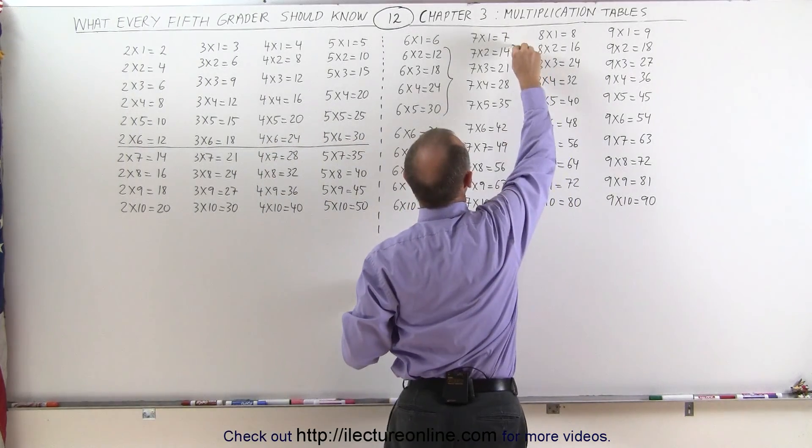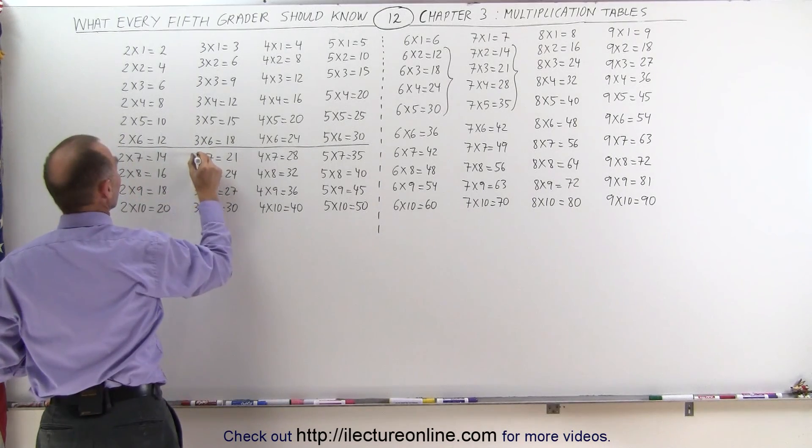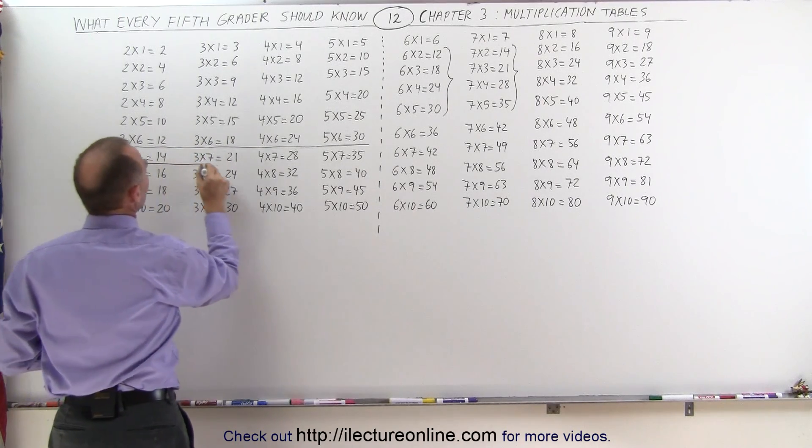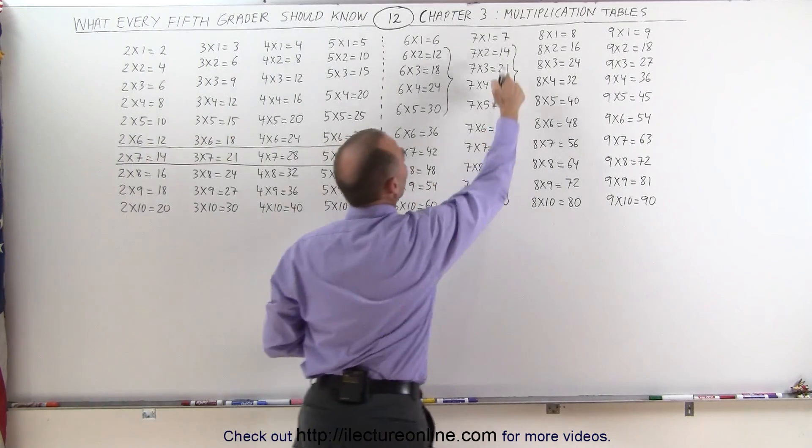For example, we can look at these right here and come over here and notice that 2 times 7, 14, 3 times 7, 21, and so forth, you get the same answers here as you do over here.